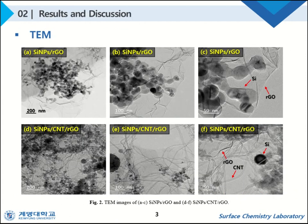TEM analysis was performed to investigate the shape and composition of the prepared samples. Round-shaped silicon nanoparticles and wrinkled graphene sheets were observed in the silicon nanoparticles reduced graphene oxide composite film. In Figure 2, long and thin carbon nanotubes were bound and it was observed that the carbon nanotubes formed a woven structure with the silicon nanoparticles reduced graphene oxide in the composite film.